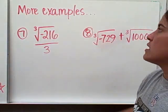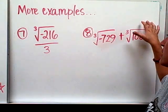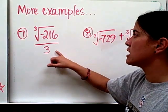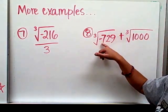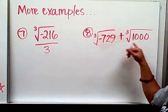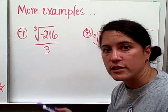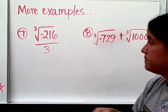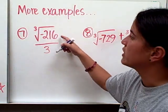So a few more examples with cubed roots. Number 7 and number 8. The cubed root of negative 216 divided by 3. And number 8, the cubed root of negative 729 plus the cubed root of 1000. So when you're ready to hear my explanation, press play.